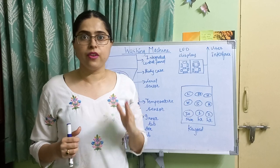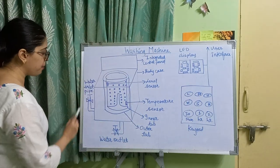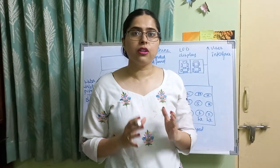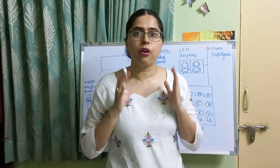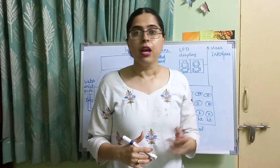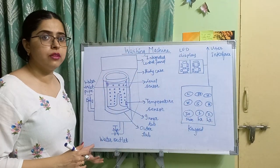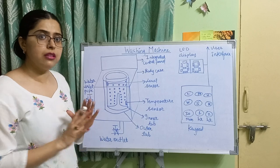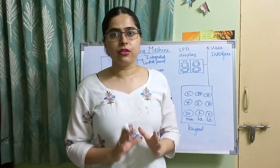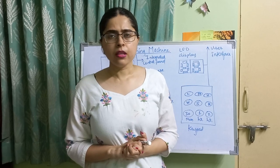There are two pipes: the water inlet pipe and the water outlet pipe. The water inlet pipe is connected to the home water supply line and controls the level of water inside the washing machine. The water outlet pipe is used to drain the water out of the machine after the clothes are washed.